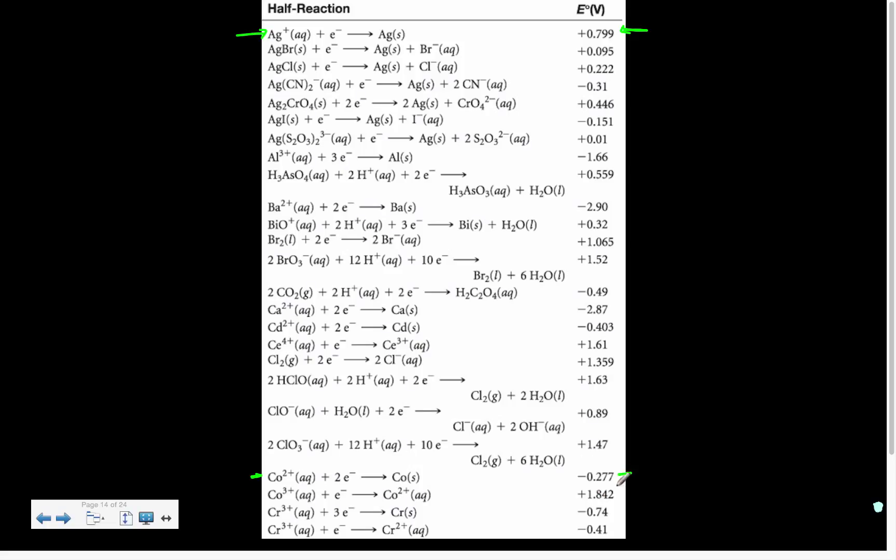So what that means is if we flip this one and keep this one forward, because basically if we're going to have a full cell, one of them has to get flipped to be the oxidation. So we'll flip this one. So cobalt to cobalt 2+.